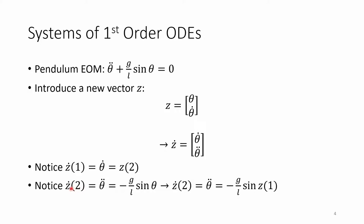The second element in the Z dot vector, Z dot of 2, equals theta double dot. If we go back up to the pendulum EOM, we can see that theta double dot just equals this entire term moved over to the right-hand side. If we go back down, we can replace this theta here with Z of 1.